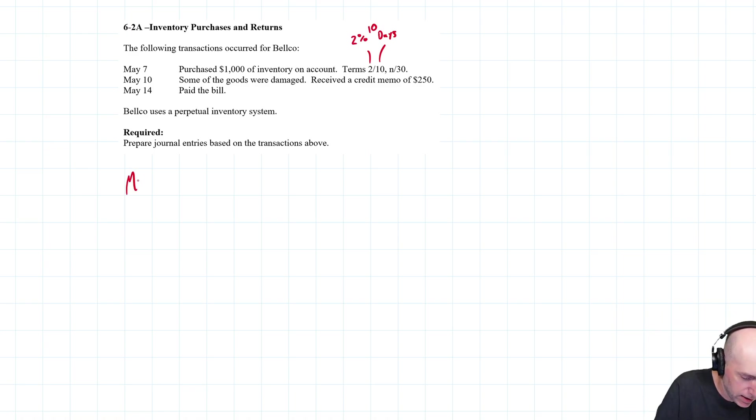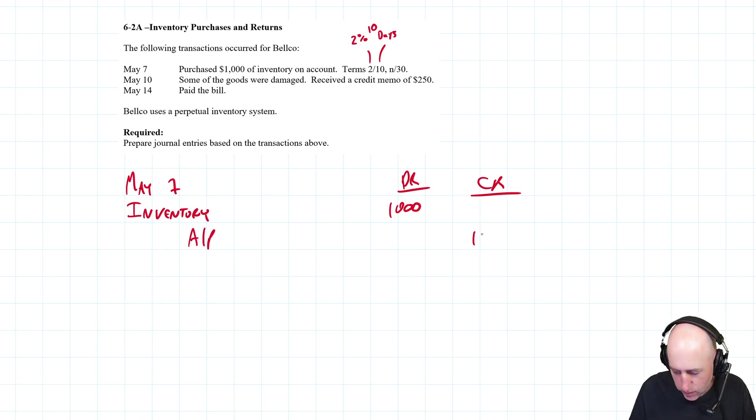Let's start with May 7. What happens? We buy inventory. Inventory's an asset, so we debit inventory $1,000. We credit AP - we bought the inventory on account, not for cash, so credit AP.